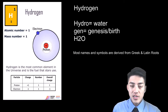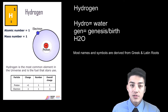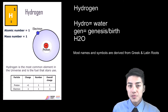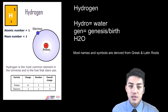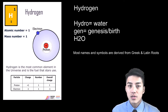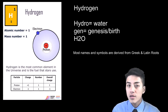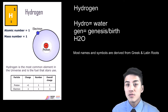Most of the names on the periodic table are derived from Greek and Latin roots. Take hydrogen for example: hydrogen has the root hydro, which means water, and then gen, which means generation or genesis or birth. So when you put the two roots together, you literally get the birth of water — and guess what's found in water? H, H2O.